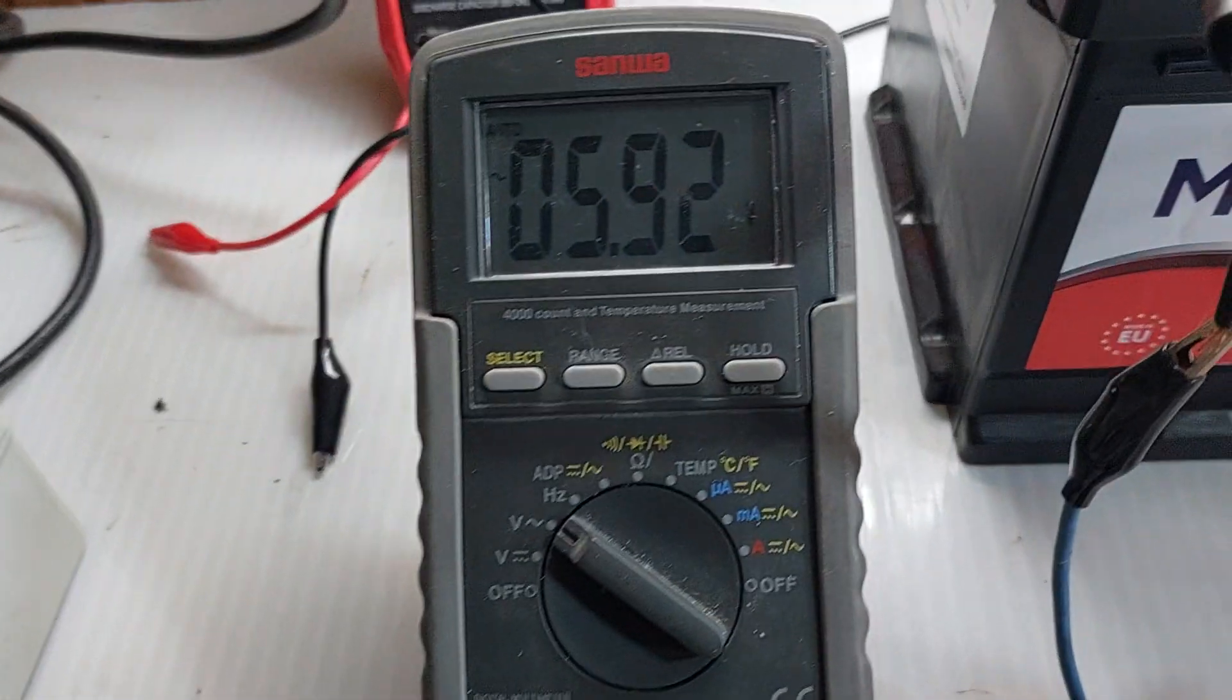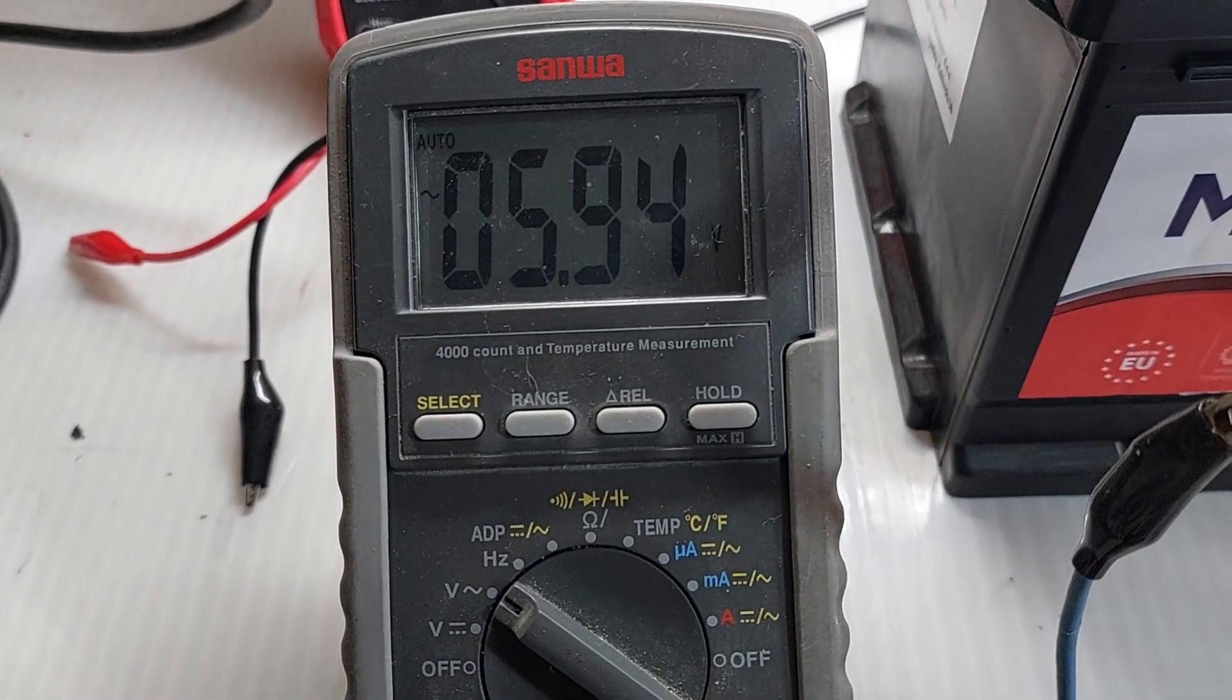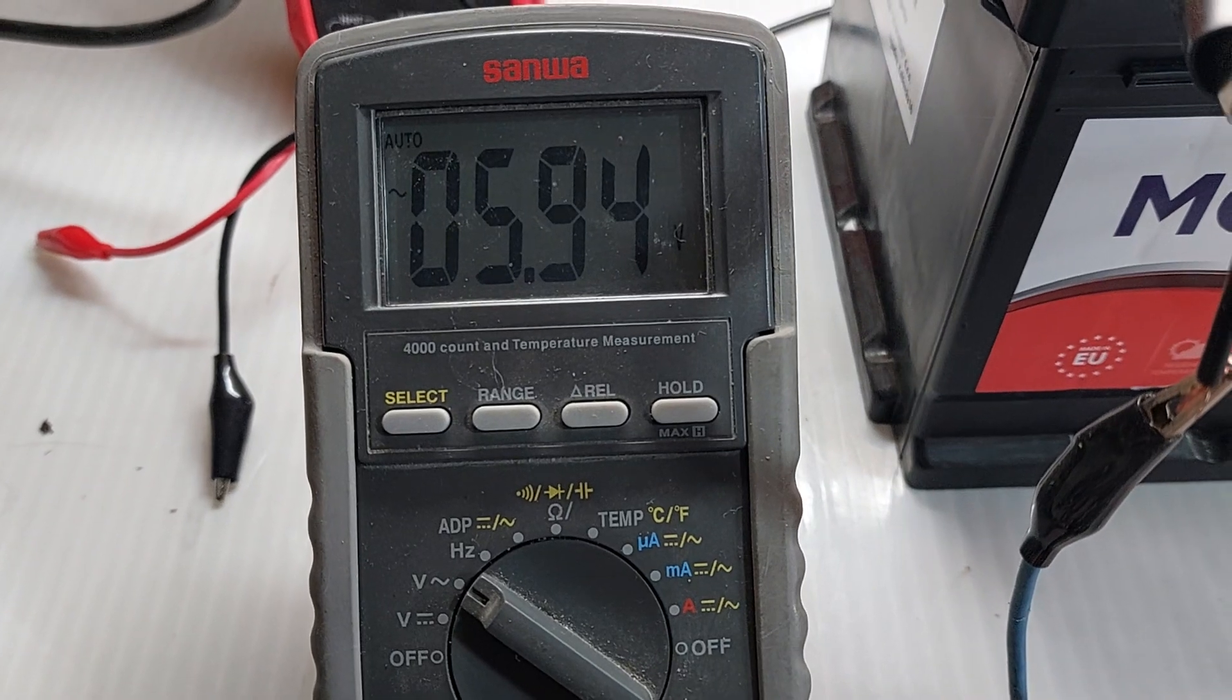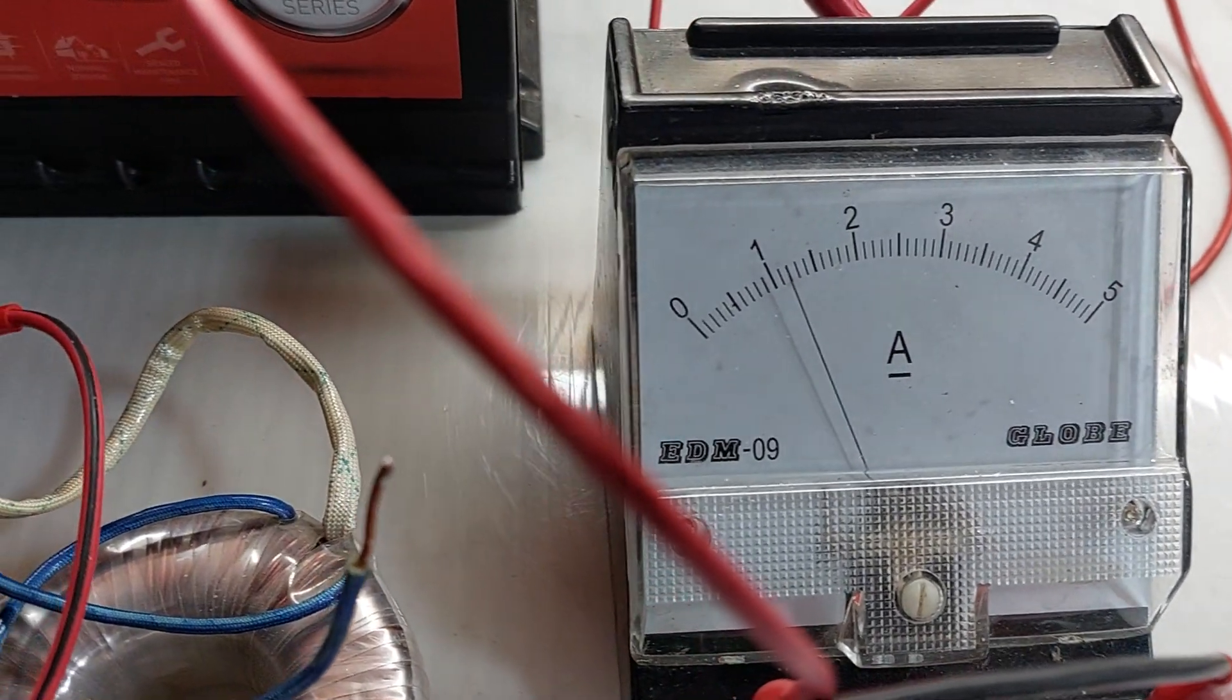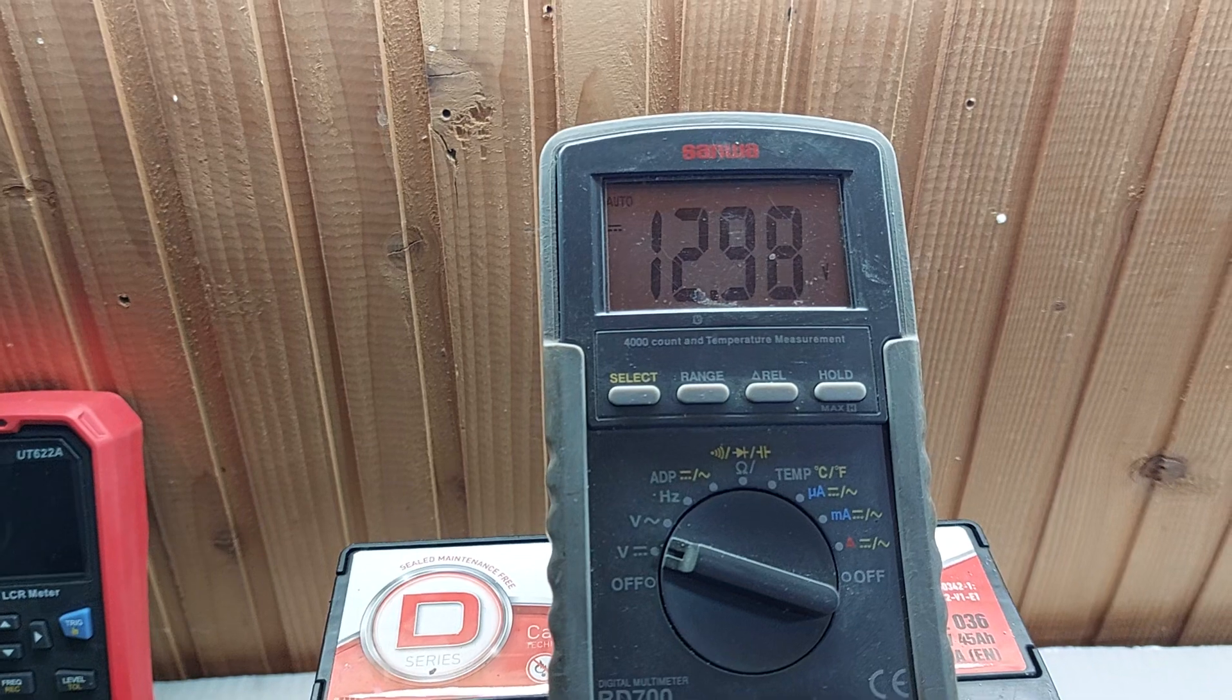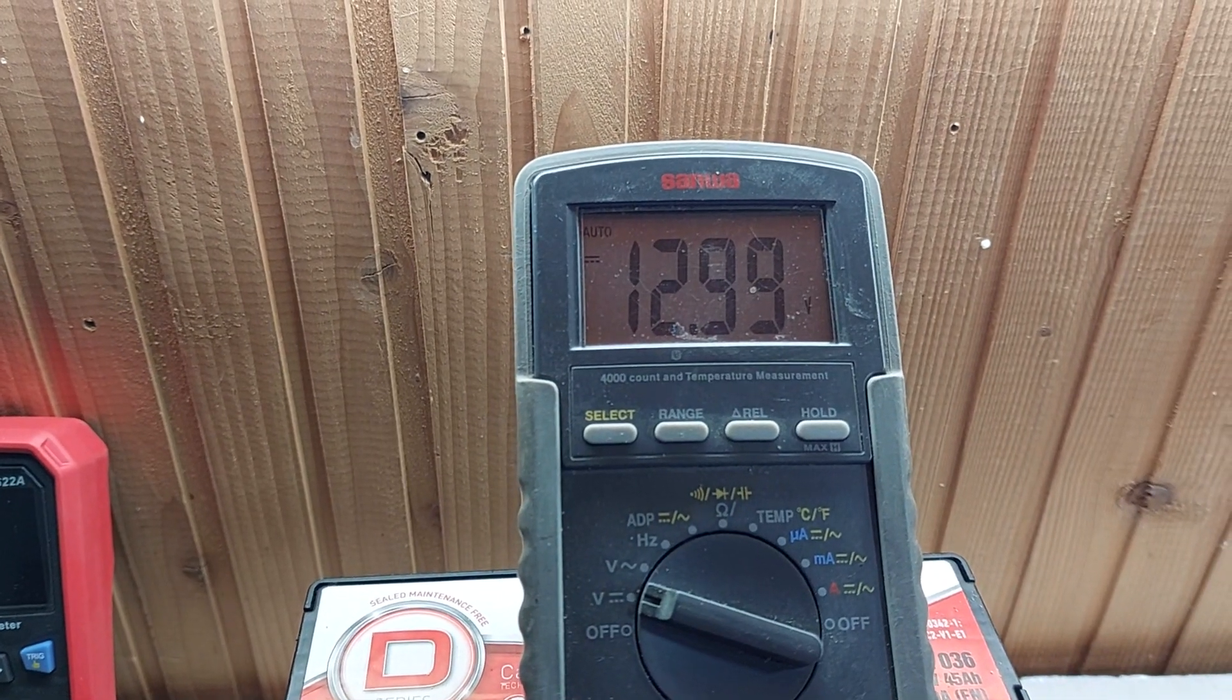So the AC voltage on the secondary is 5.94 volts. It's pushing 1.2 amps and it's climbing up very nicely.